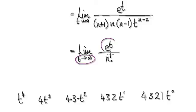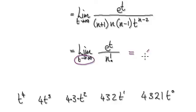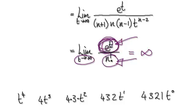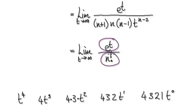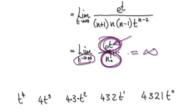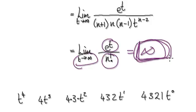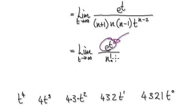Now, as t tends to infinity, the e^t term keeps growing and growing, heading towards infinity, while n factorial is a definite finite number. So eventually, e^t will be much, much bigger than the polynomial term. Because we know that this ratio — one expression divided by the other — heads towards infinity as t tends to infinity, we can conclude that e^t eventually dominates and grows far larger than the polynomial.